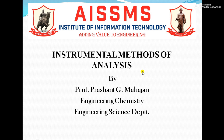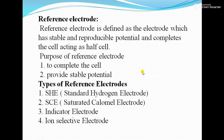Today we are going to see the next part, that is the reference electrode. It is defined as the electrode which has a stable and reproducible potential and completes the cell acting as a half cell. The purpose of the reference electrode is: first, to complete the cell, and second, it provides stable potential.